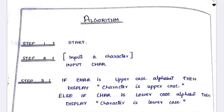By this time you know how to write an algorithm. The first step is Start, next is Input, the third step will be your Logic, the fourth step will be your Output, and the fifth step will be your Stop. So this is the algorithm.